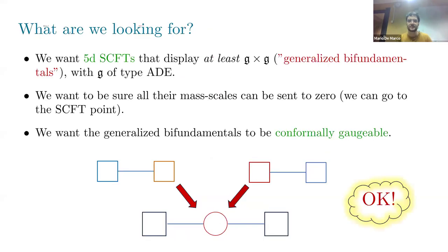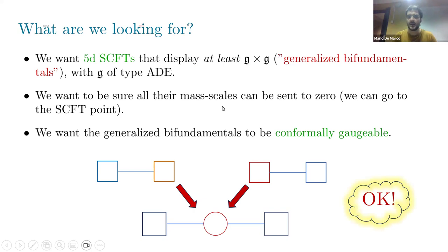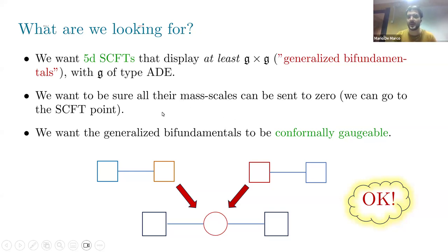In summary, we found atoms displaying at least G×G flavor symmetry in the UV, constructed from Calabi-Yau singularities ensuring reachability of the superconformal fixed point, and a geometric criterion for conformal gauging of G×G flavor symmetry to produce generalized quivers.